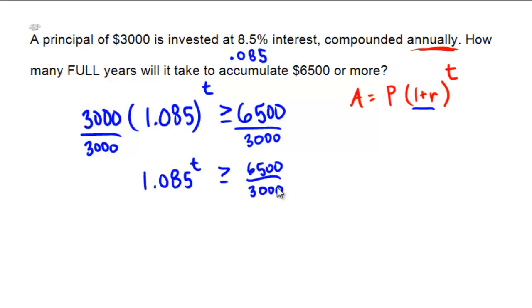Now in order to get variables out of exponents, our standard way of doing this would be logarithms. So I'm now going to perform a logarithm to both sides. I'm going to have ln of 1.085 to the power of T bigger than or equal to ln of 6,500 over 3,000. I always like ln's. It takes less writing, but it doesn't matter which logarithm you use. It's always going to come out to be the same.